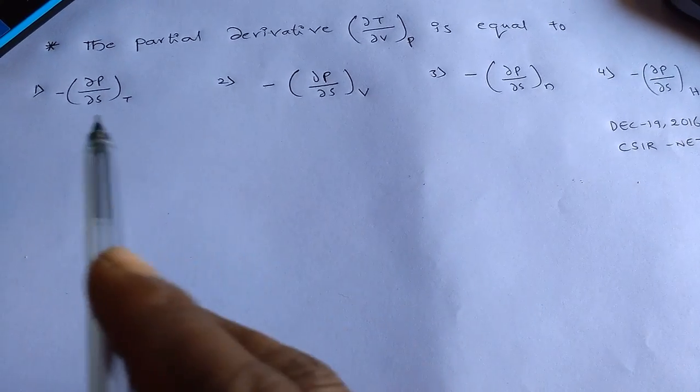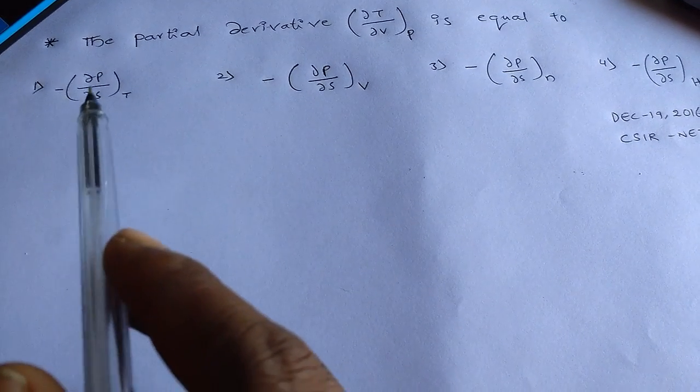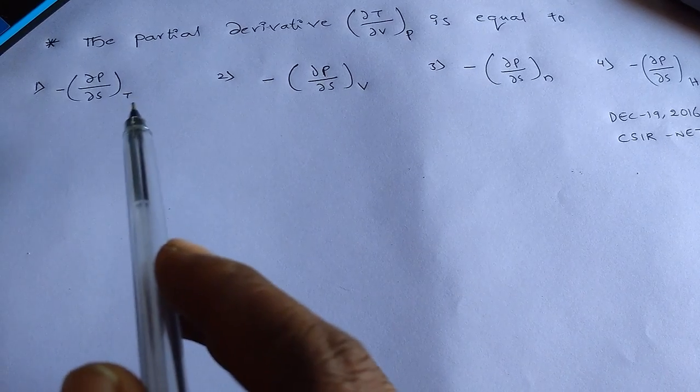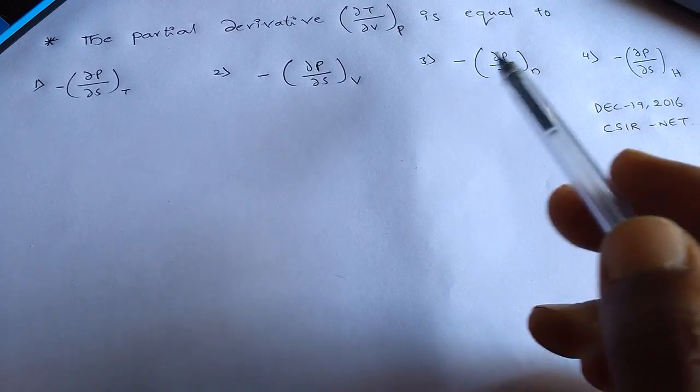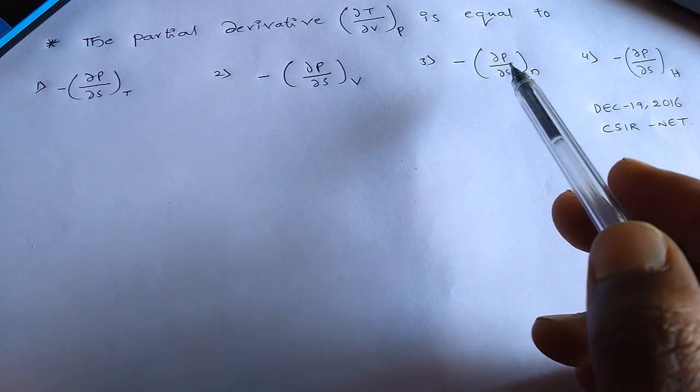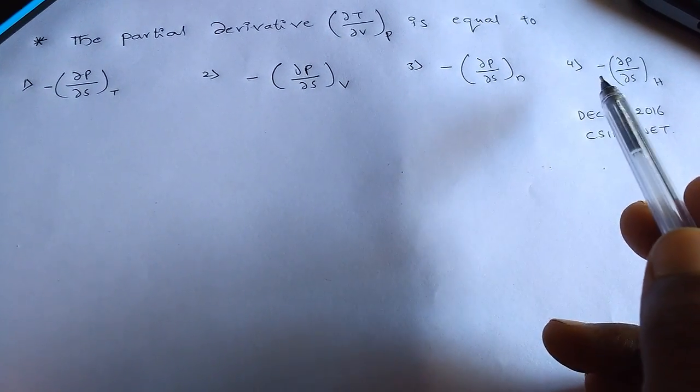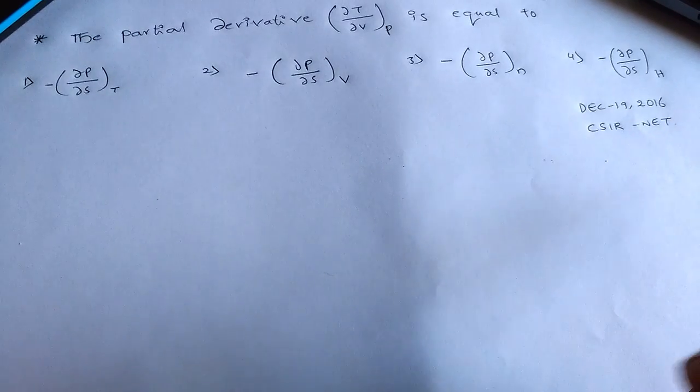so we have the four options. First one is negative dou P by dou S into T and second one is minus dou P by dou S V and third one is minus dou P by dou S N and fourth one is minus dou P by dou S H.